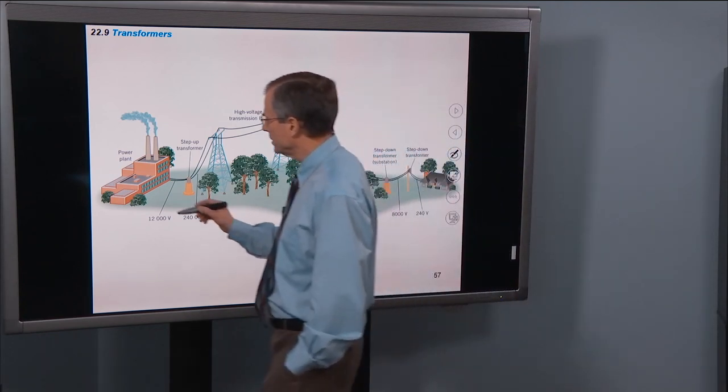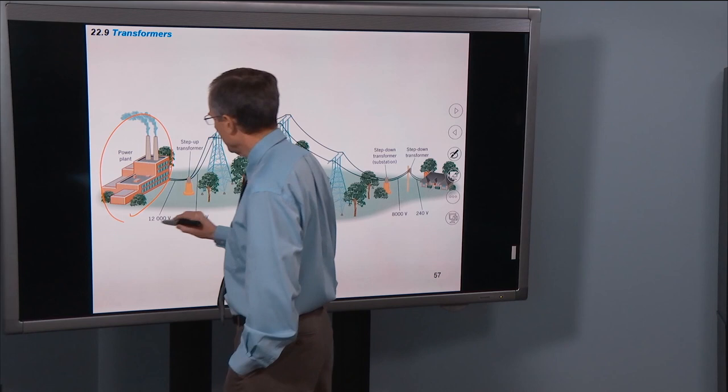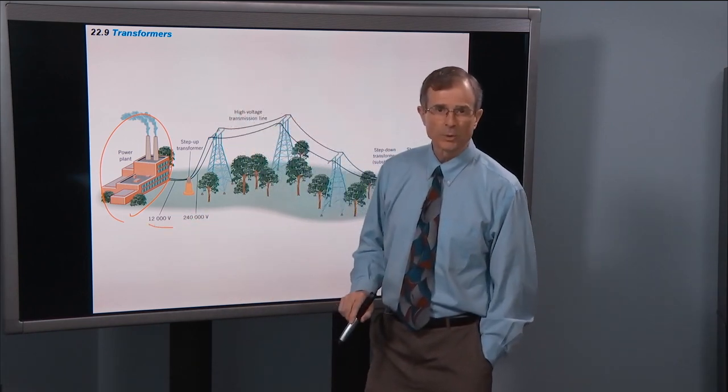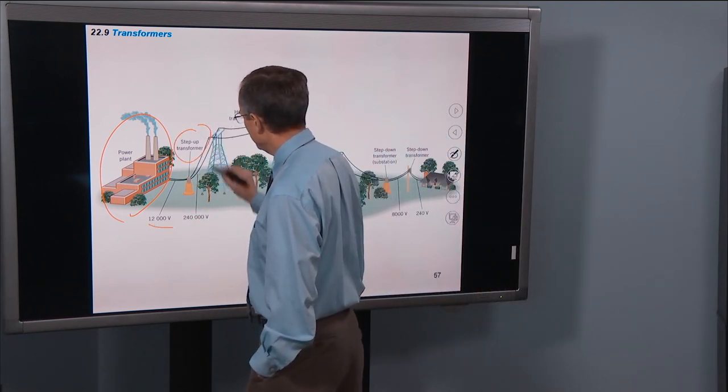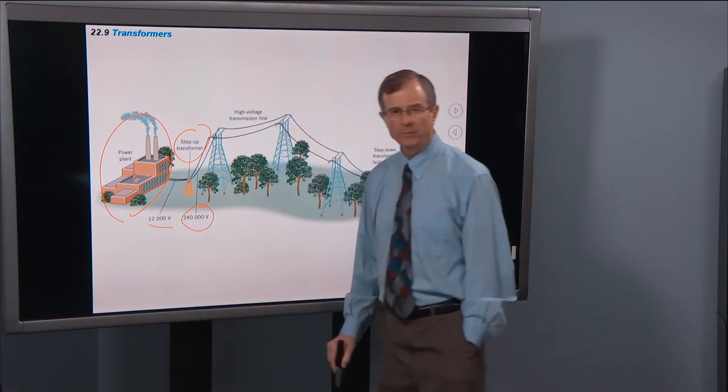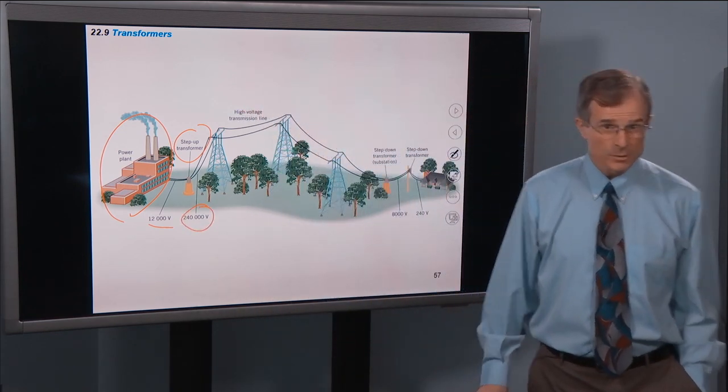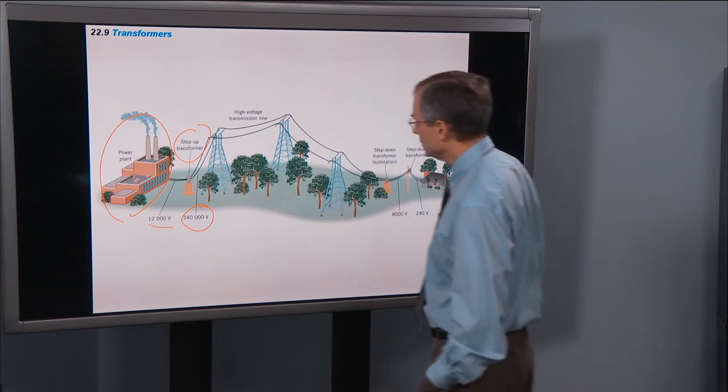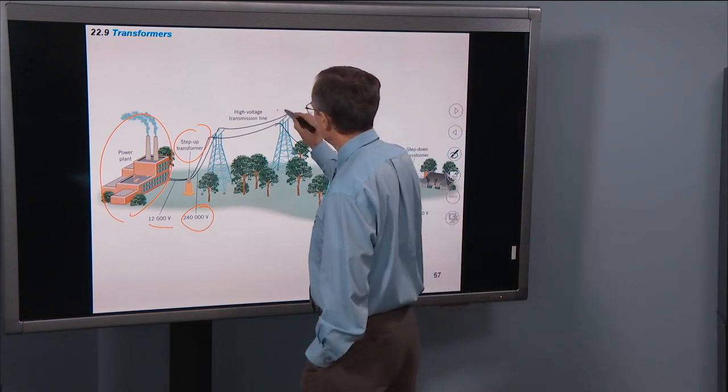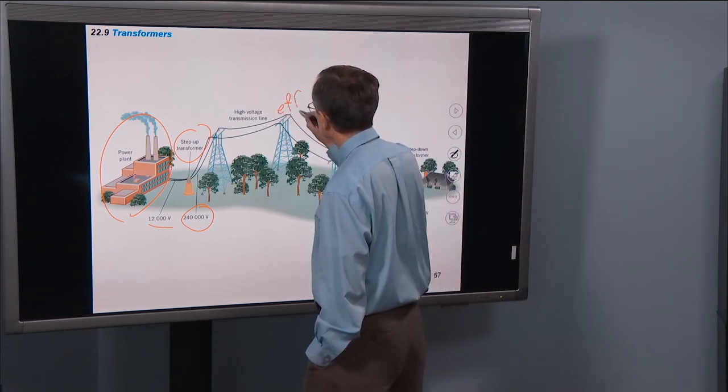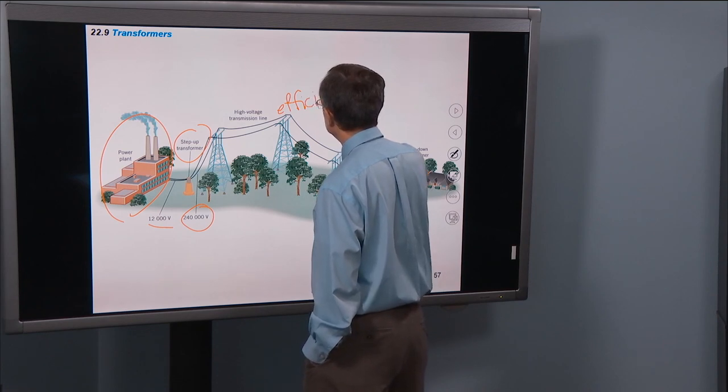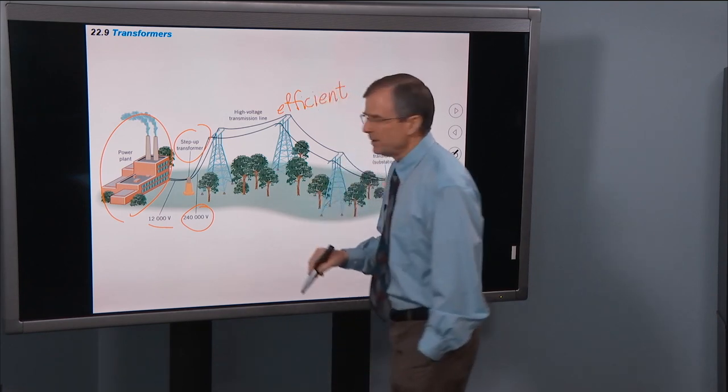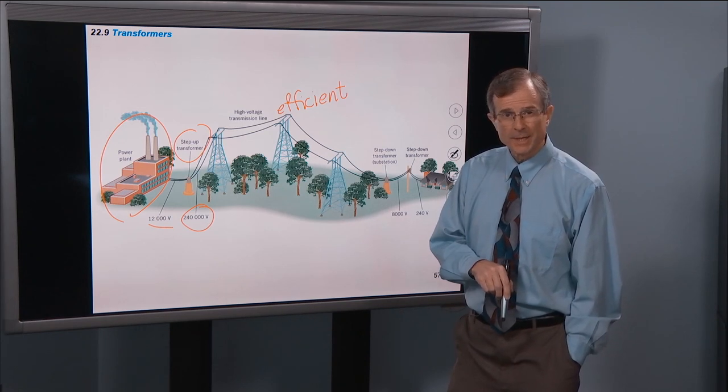So power is generated at a power plant at about 12,000 volts typically. Then there's a step-up transformer that takes the voltage up to 240,000 volts for the high voltage transmission lines, which are more efficient than low voltage transmission lines.